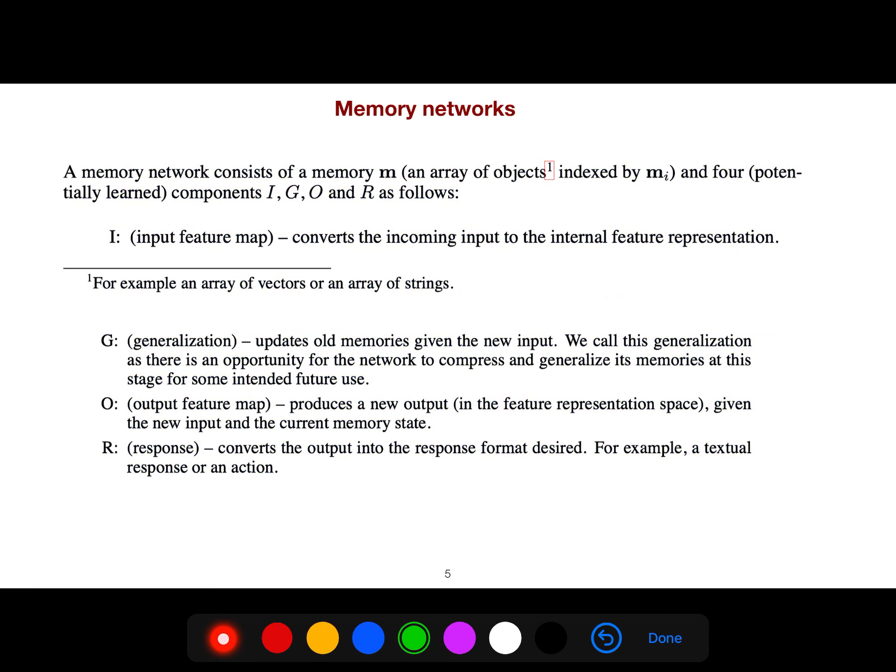A memory network consists of memory, for example memory m1, m2, m3, many different sentences. For example, Alex came, Bob went to the office, someone left the milk. These are the sentences that are stored in different memories. Your input is your query, the question that you ask.